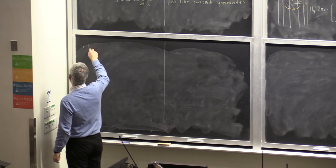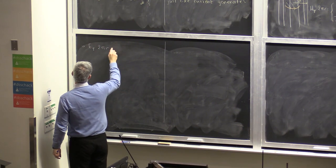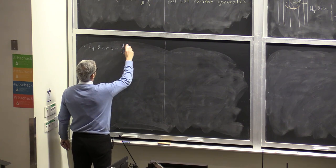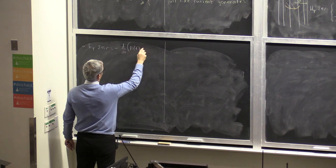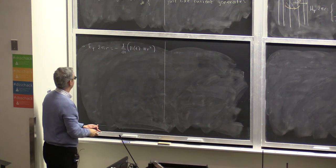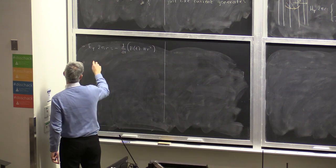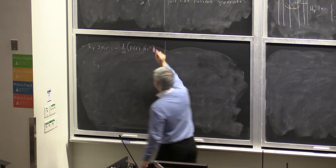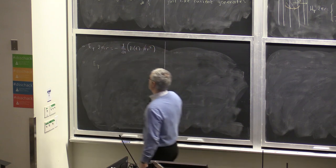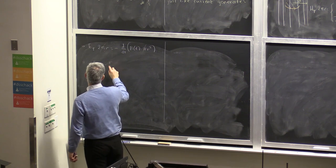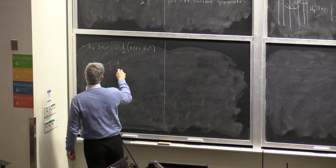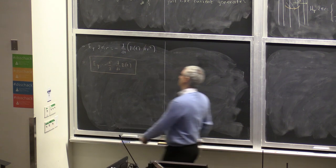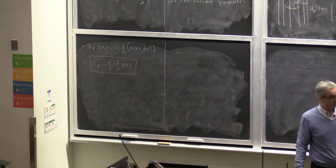As a result, the law tells me E_phi times 2 pi R equals minus d/dt of B(t) pi R squared. Therefore, the electric field E_phi equals minus R over 2 times dB/dt. So there will be a circulating electric field.